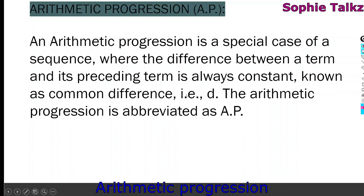Next is Arithmetic Progression. An Arithmetic Progression is a special case of a sequence where the difference between a term and its preceding term is always constant. For example, in 1, 3, 5: 7 minus 5 equals 2, and 5 minus 3 equals 2. This constant difference is called the common difference, denoted D. Arithmetic Progression is abbreviated as AP.